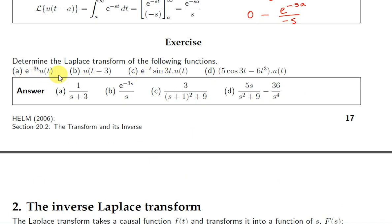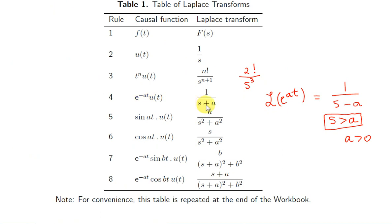Now let's go through some of these examples. Let's look at L{e^(-3t)}. So we go back to the table. We want e^(-3t), so a is going to be 3. So we get 1/(s+3).